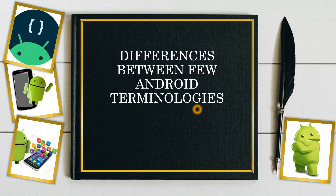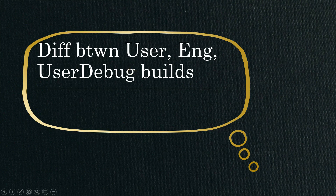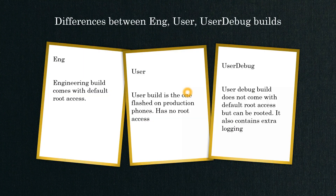Hello everybody, welcome to my next session on Android framework components. Today we will see a few differences between Android terminologies. These are quite simple but it's very important to exactly know what they mean. We'll begin with understanding what is the difference between user, engineering, and user debug builds. We use these terms very often.